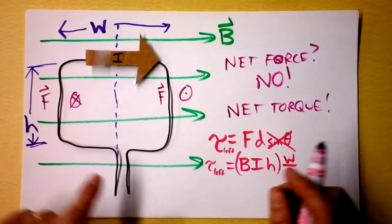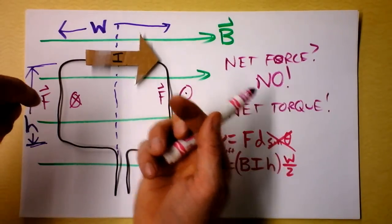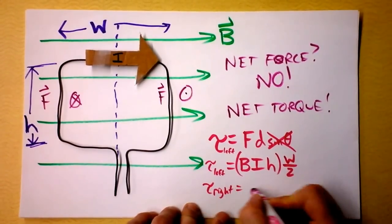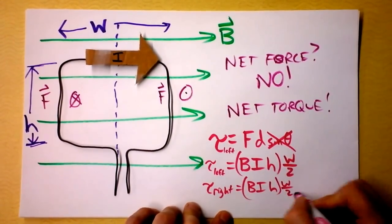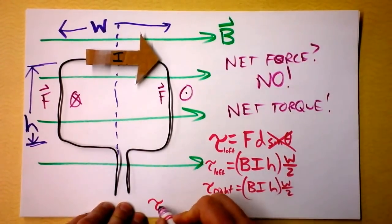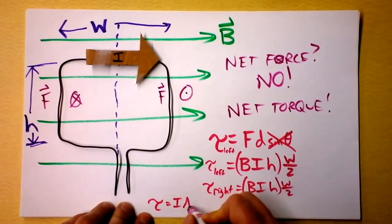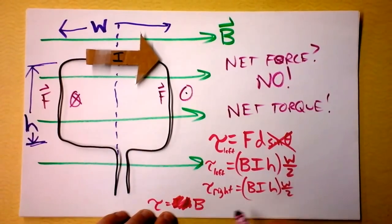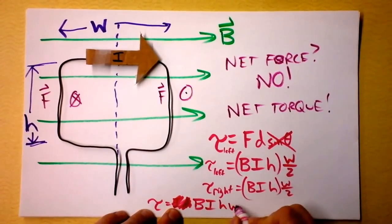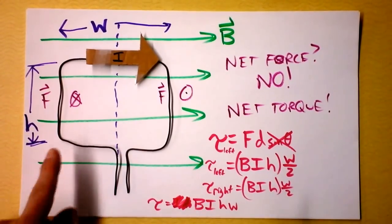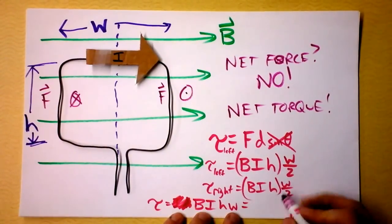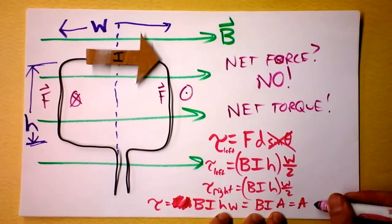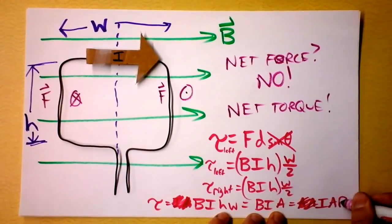The torque from the right side is exactly the same quantity: B times I times H times W over 2. Adding both sides together, the total torque on the system is magnetic field times current times height times width. Height times width is, in fact, the area of the loop. So we can write it as B times I times the area of the loop — usually written as I times A times B.